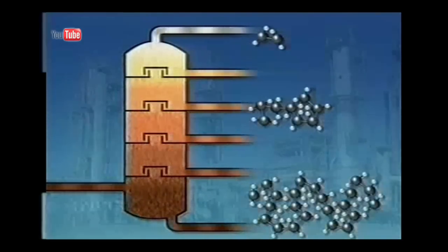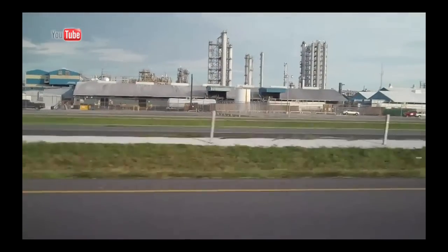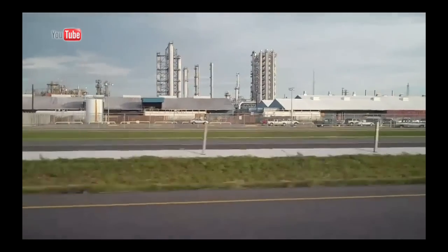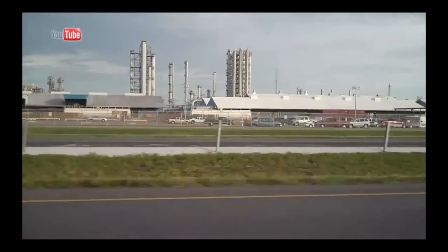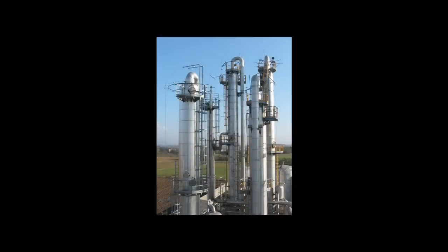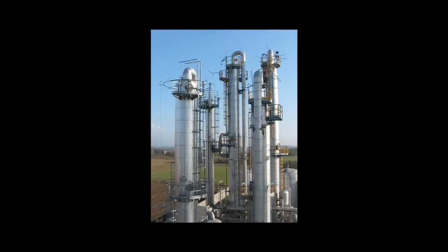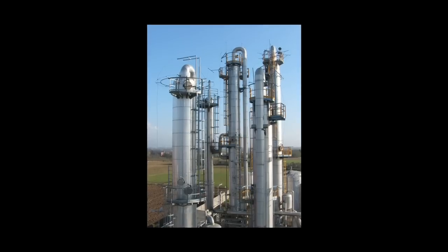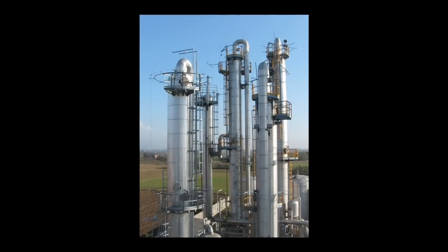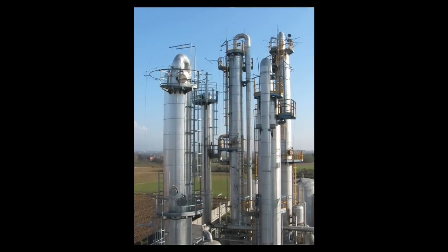Fractional distillation is also used in the oil industry for separating the different fractions of crude oil into butane, pentane, hexane, heptane, octane, nonane, decane, undecane, dodecane, benzene, xylene, paraffins, and heavy oils and greases. The taller the fractionating columns, the better the separation — hence oil refineries have columns that may be 30 meters tall.